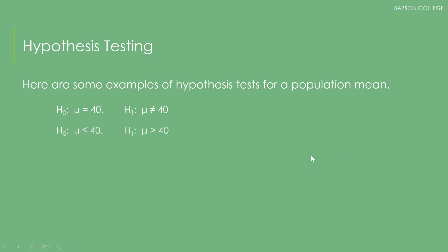We move on to a one-sided test where you see the greater than sign, and another one-sided test where you see the opposite, the less than sign. Here we are only interested in one side of the presumed population mean.